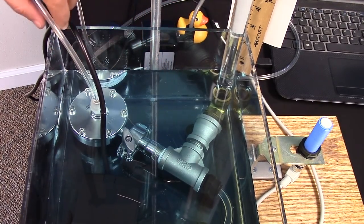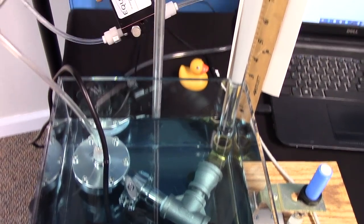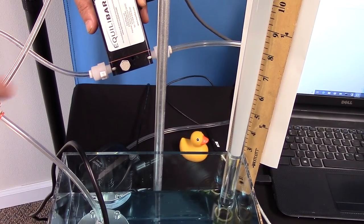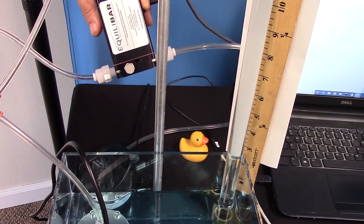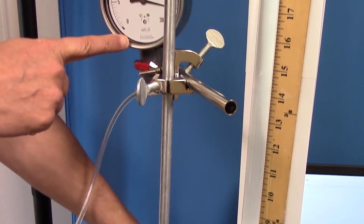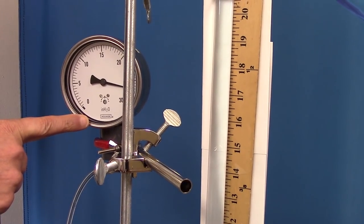The back pressure regulator is controlled by air pilot pressure. We're providing that air pilot pressure with an electronic pressure regulator, and the electronic pressure regulator's pilot pressure is going to be displayed on this gauge, which conveniently for our demonstration is shown in inches of water column.